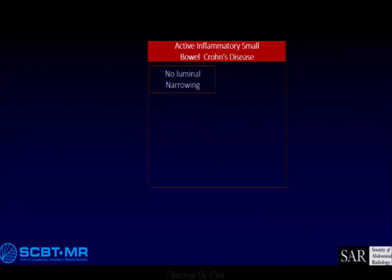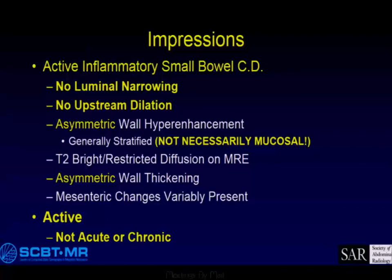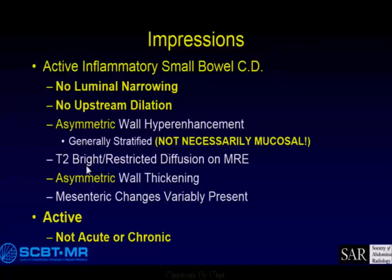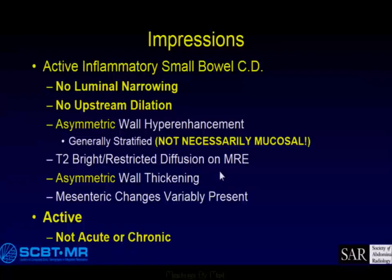Let's start with active inflammatory small bowel Crohn's disease with no luminal narrowing. You have no luminal narrowing, no upstream dilation, asymmetric wall changes — and that's important because if it isn't asymmetric, it might be nonspecific. T2 bright, restricted diffusion on MR, and it is active — not acute or chronic. Most of what we see is chronic; you shouldn't use the word acute, you should use the word active.